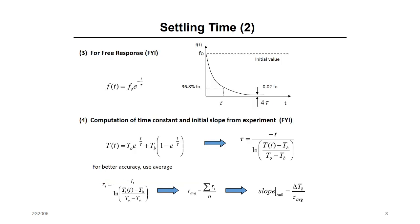Tau is the most important number we look for when designing a first-order system. For your information, if you have the same system without a step input but only initial conditions, the transient response will also be exponential — but a decaying exponential. Tau here will be the same because you did not change your system. Tau is a property of the system. However, in this case tau means how much time it takes to reach about 37% of the initial value.